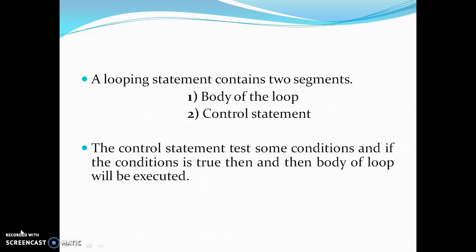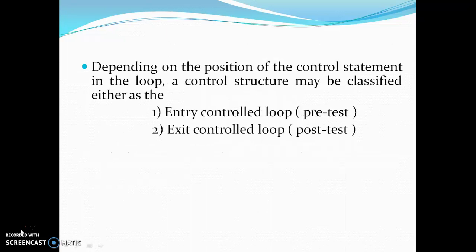A looping statement contains two segments: the body of the loop and the control statement. The control statement tests some condition — we can also say that the control statement is nothing but one type of condition. If the condition is true, then the body of the loop will be executed. Based on the position of the control statement in the program, there are two types of looping statement: the first one is entry control loop and the second one is exit control loop.